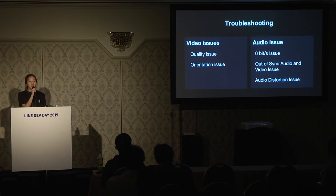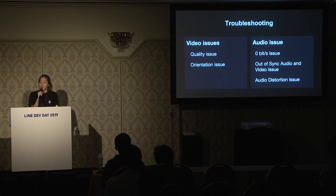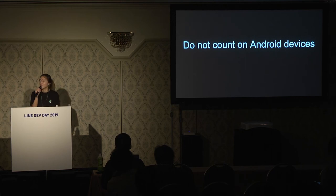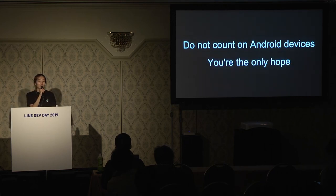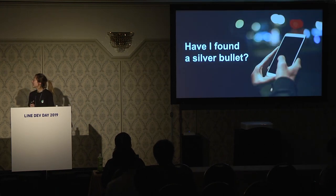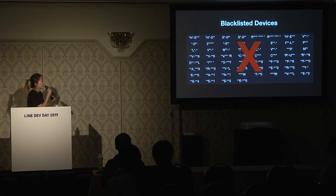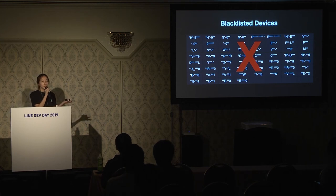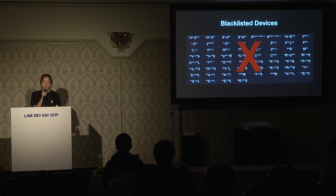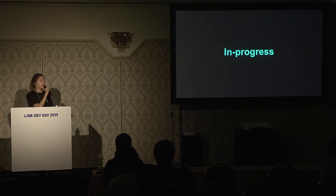Until now, I briefly addressed some issues of Android fragmentation. The most important lesson is: do not count on any Android devices. You are the only hope — believe yourself. Do I have a silver bullet? In some part, yes — Cruiser doesn't have any blacklist now, and there is less than 10% transcoding failure. But as shown, there are still many device bugs in Android devices, so I'm still working to resolve those issues. I can say I'm still progressing toward finding a silver bullet.